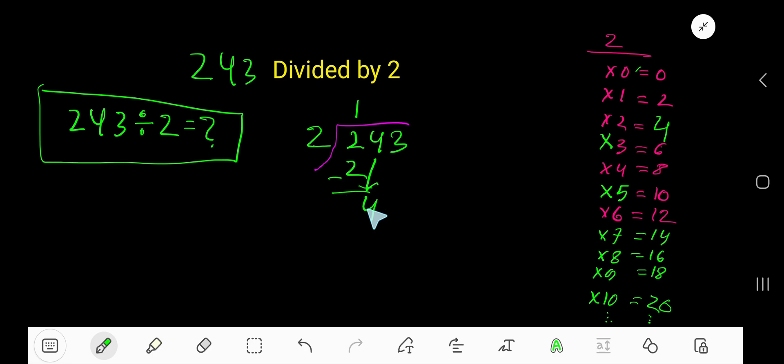04 means 4. 2 goes into 4 how many times? 2 times. 2 times 2 is 4, subtract, 0. Bring down this 3. 03 means 3. 2 goes into 3 how many times? 1 time. Write 1. 1 times 2 is 2, subtract, 1.